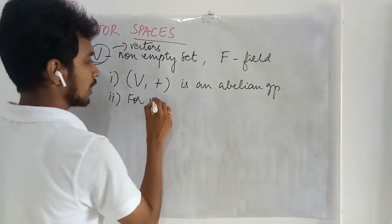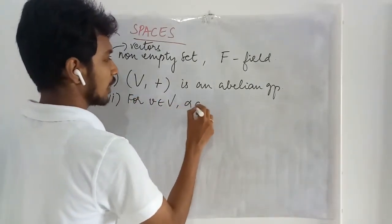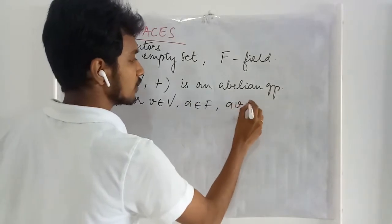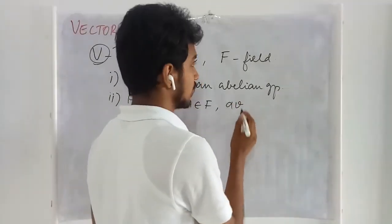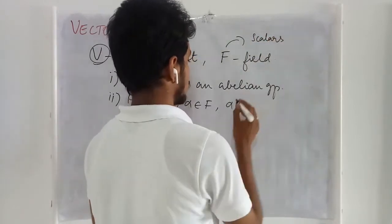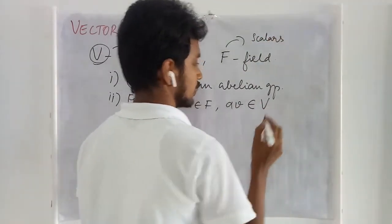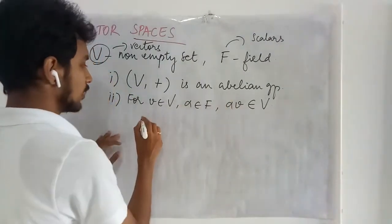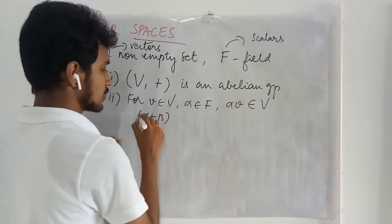Then for elements in V and elements in F, this multiplication - this is known as scalar multiplication. The entries of field are to be called as scalars. This is well defined and it has to satisfy certain axioms.